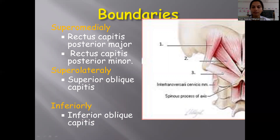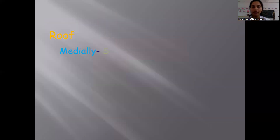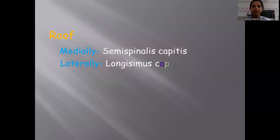All muscles will form the boundary for the suboccipital triangle. Now coming to the roof of the triangle: medially it is covered by the semispinalis capitis muscle, and laterally by the longissimus capitis.